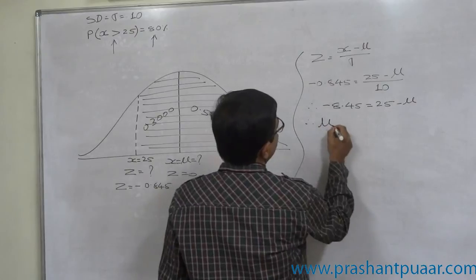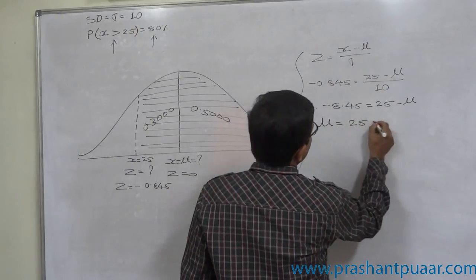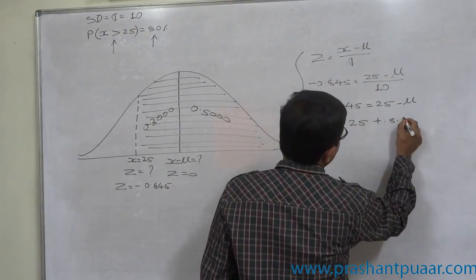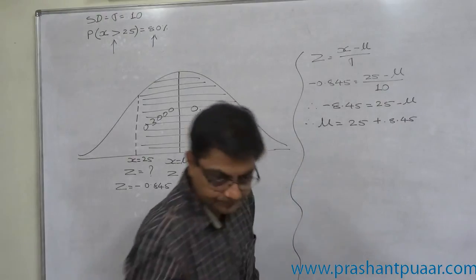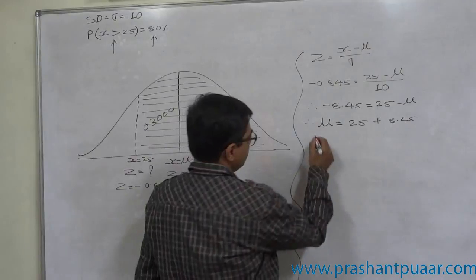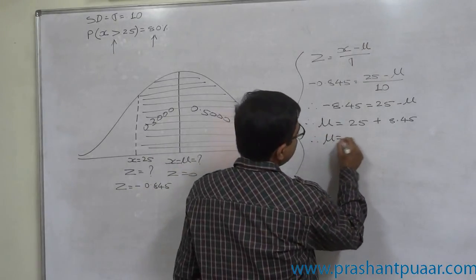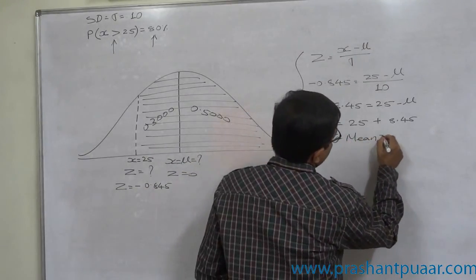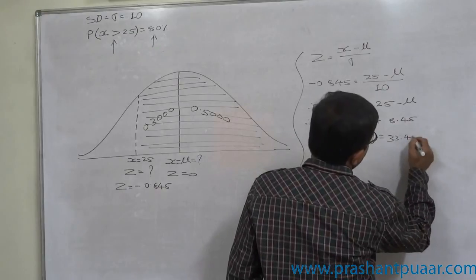So the mu or mean will be 25 plus 8.45. So we can say that, for this particular data, the mean is 33.45.